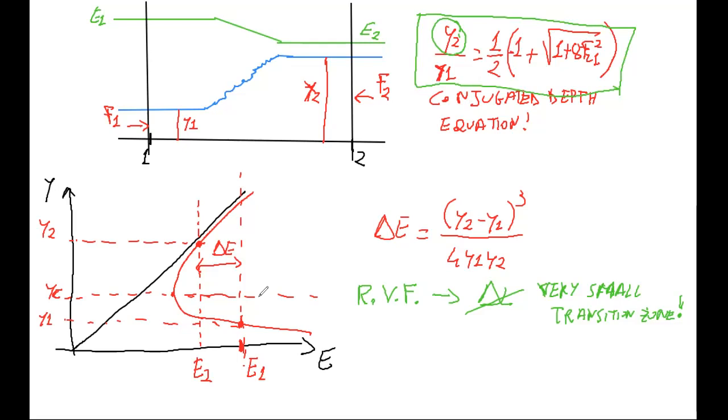And in a rapidly varied flow, there is a sudden change in the energy, there is a sudden change in the water height, an increase, but a decrease in the energy from E1 to E2. This quantity E1 minus E2, this delta E, can be computed according to this formula.